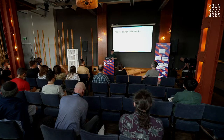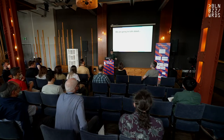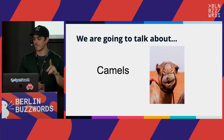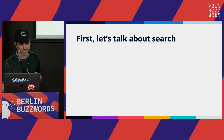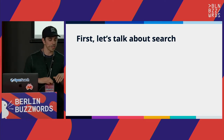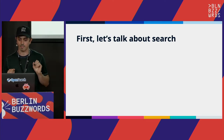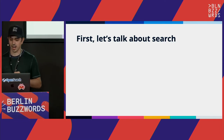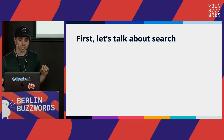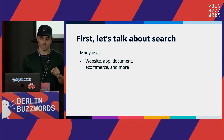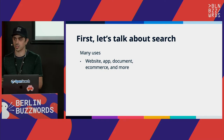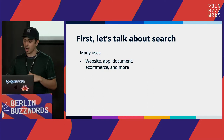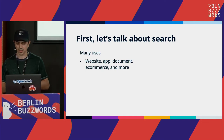Today we are going to talk about camels. But before we talk about camels, let's talk about search. Search technologies have been around for decades. In fact, Doug Cutting wrote Lucene back in 1999. These technologies have many uses — people use them for anything from website search, application search, enterprise document search, e-commerce experiences, and many more use cases.